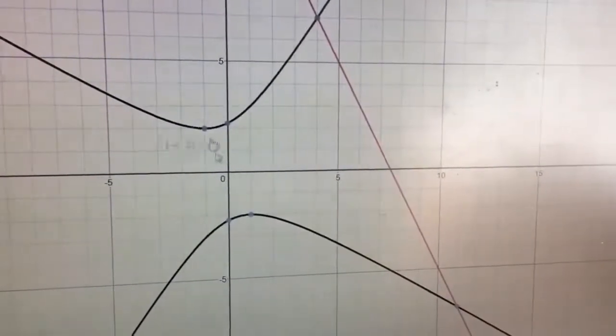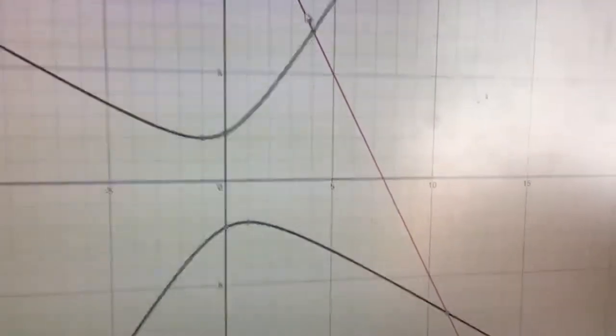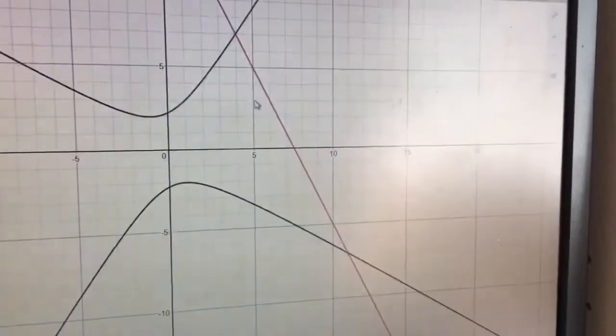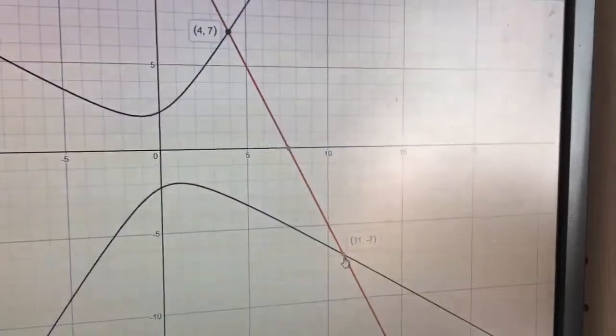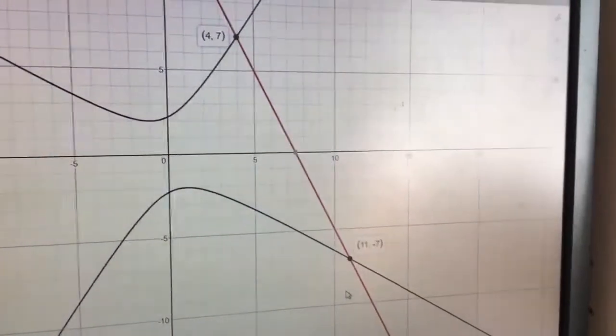It's got this top part and the bottom part. You can see the red part is just a line. When they intersect, those are the solutions. You can see up here is 4, 7, and down here is 11, negative 7.